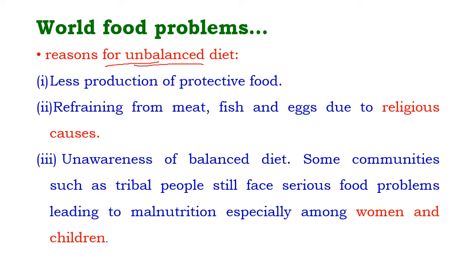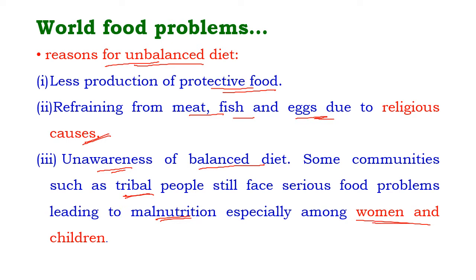Reasons for unbalanced diet include less production of protective food and refraining from eating meat, fish, and eggs due to religious reasons — some religions ban non-vegetarian food. Another reason is unawareness of balanced diet among people. Some communities, especially tribal communities, still face serious food problems leading to malnutrition, particularly among women and children.